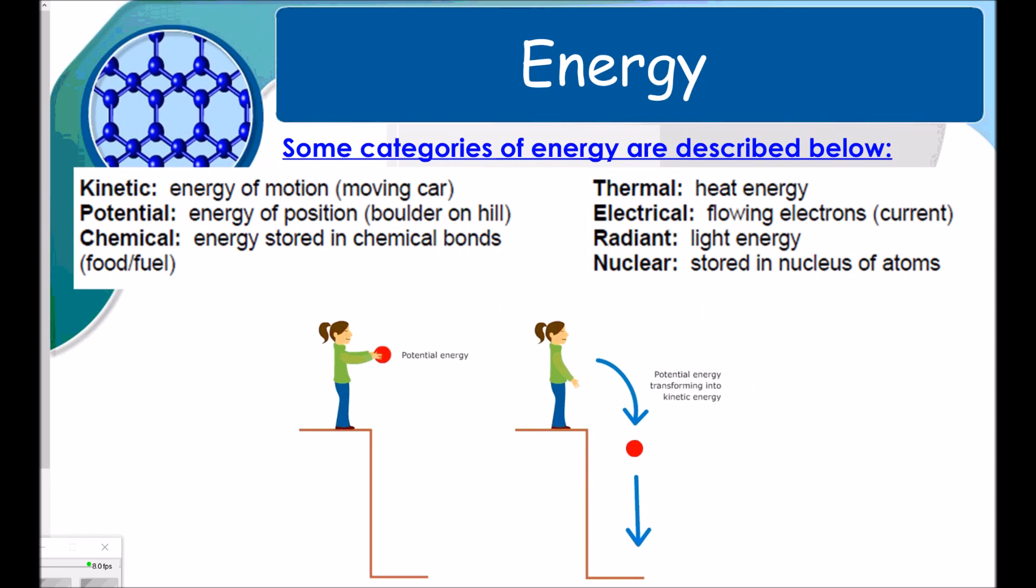Some categories of energy are described below. So we have kinetic, potential, chemical, thermal, electrical, radiant, and nuclear. And you can read those on your own.